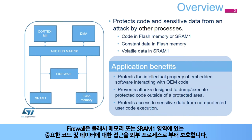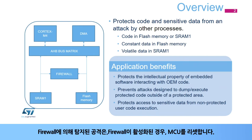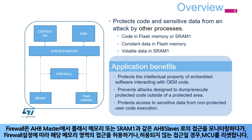The firewall protects the access to sensitive code and data located in the flash memory or SRAM1 segments from external processes. Any attack detected by the firewall causes the MCU to reset if the firewall is enabled. The firewall monitors each access from the AHB masters to the flash memory or SRAM1 AHB slaves.